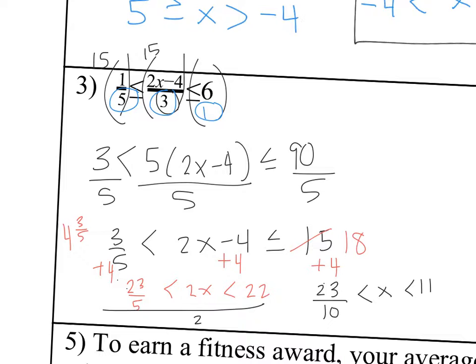I noticed up here that I need to change this to less than or equal to. So my final answer is less than or equal to. And the graph of this would look like, on a number line, a closed dot at 23 tenths and a closed dot at 11, and you would shade in between.